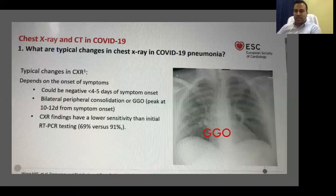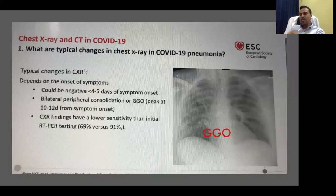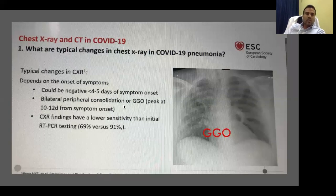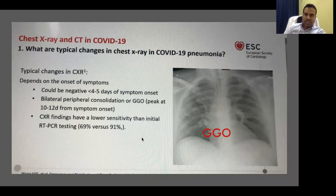Now moving to the second stage — especially pneumonia. From Wuhan, they identified an unknown pneumonia. This is the hallmark of COVID-19 due to SARS-CoV-2. The typical X-ray finding in COVID-19 patients is GGO — ground glass opacity. That's the term being used.